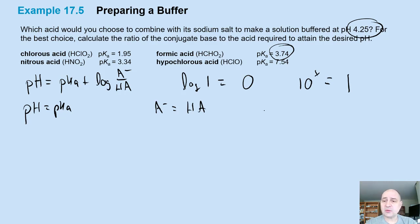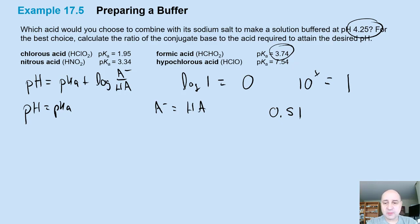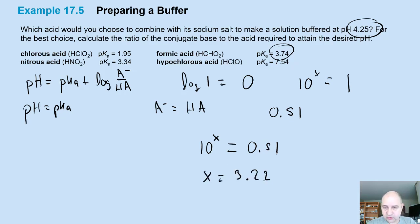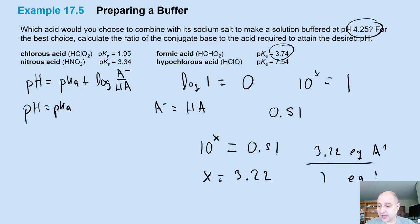All we have to do here is raise the pH by 0.51. That means we want to know to what power to raise 10 to get that 0.51 — that's just the inverse negative log. If you solve for x, you're going to get a ratio of 3.22.